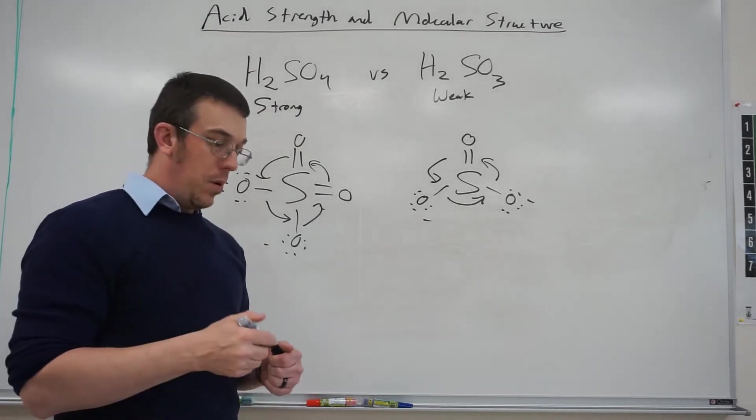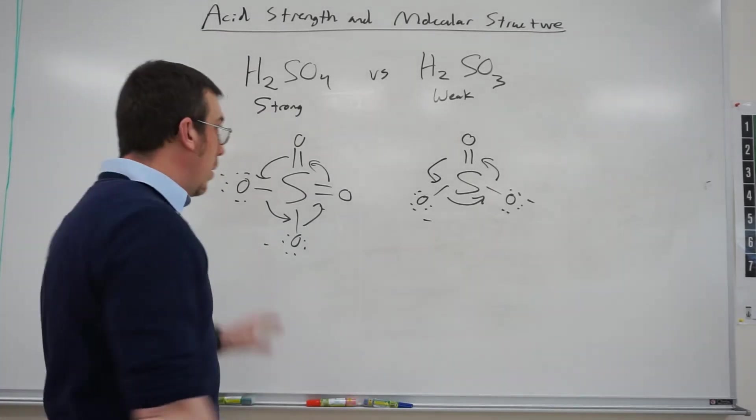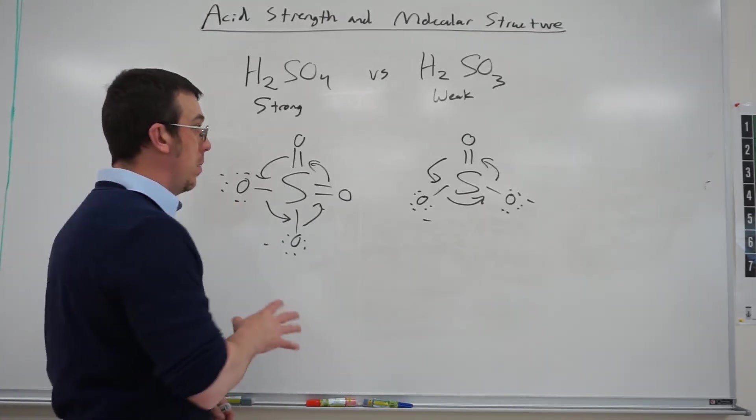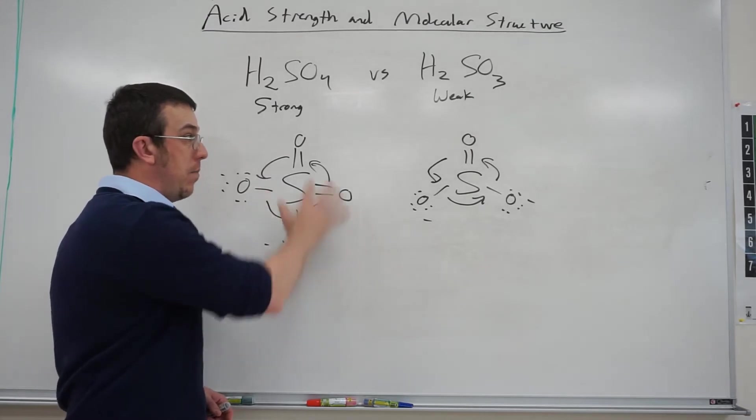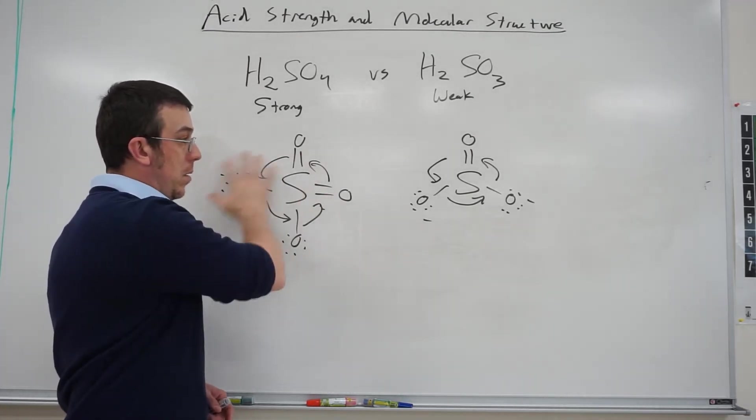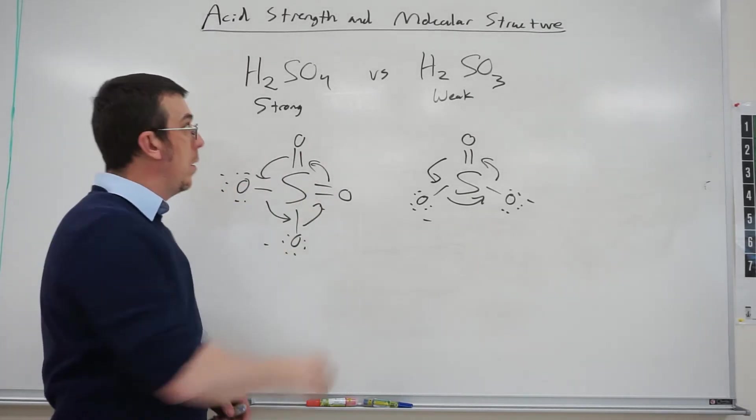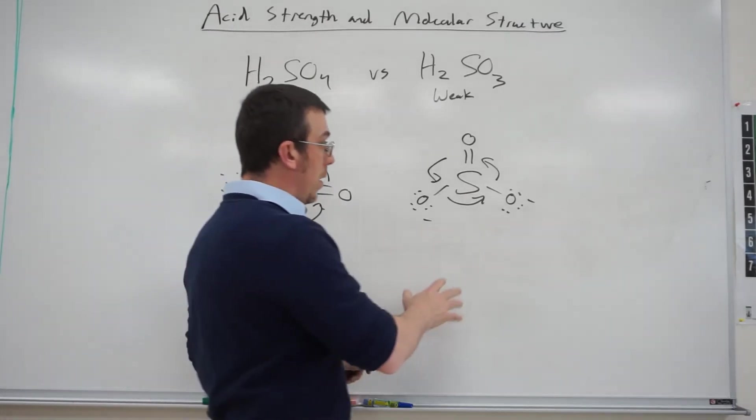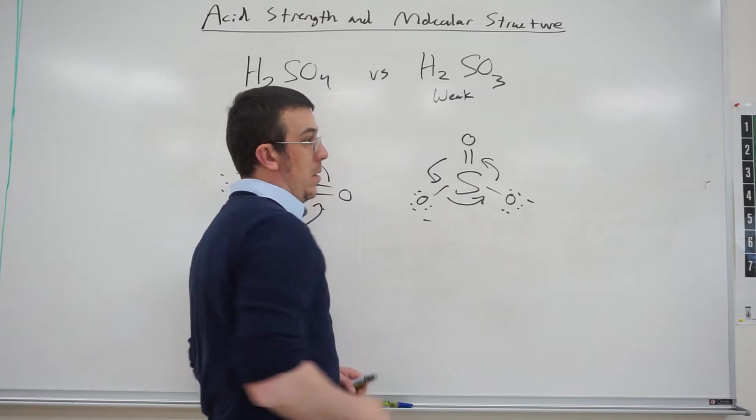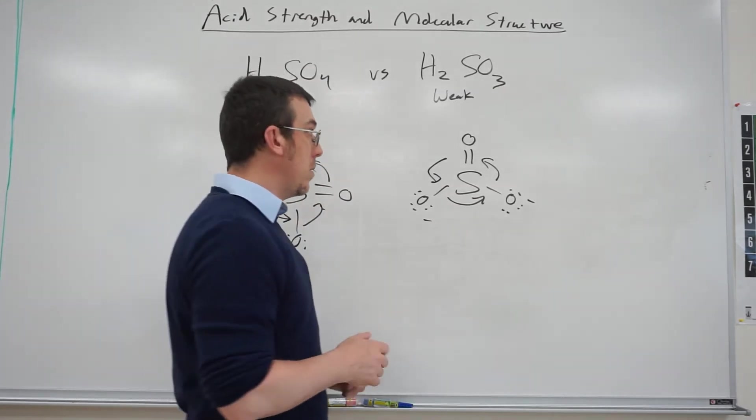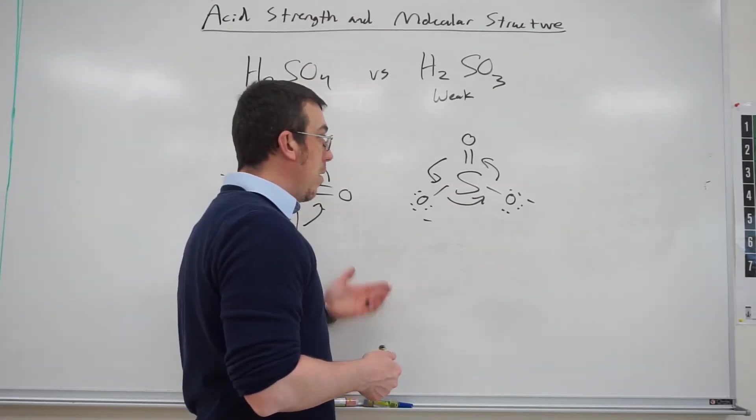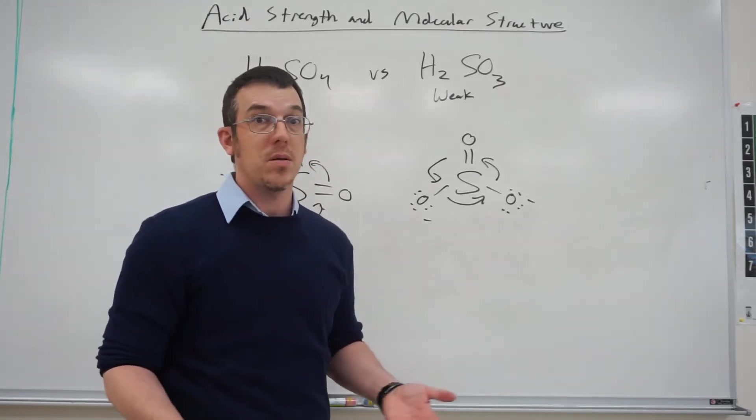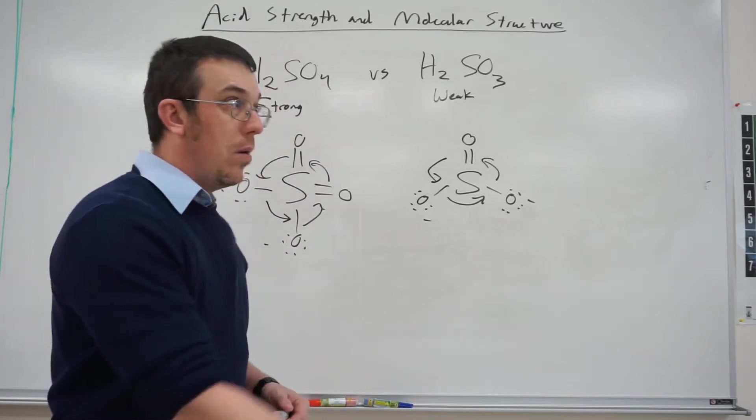So why is that important? It's all about stability. The sulfate ion has more resonance structure, so it's going to be more stable because it can lose those hydrogens a little bit easier. That's what allows H2SO4 to be a strong acid, whereas sulfite has one less resonance structure, therefore it's considered to be a weak acid. It's not as stable, so it does not want to completely dissociate its hydrogen.